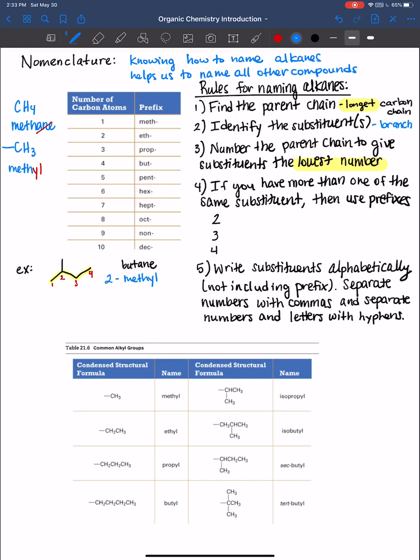And so we have a two methyl. Now, if you have more than one of the same substituent, then you have to use prefixes. So for example, if you have two methyl substituents, then that's a dimethyl. So two di, three is tri, and four is tetra.